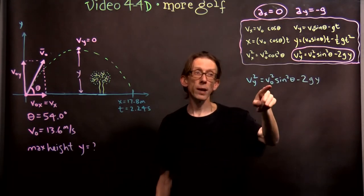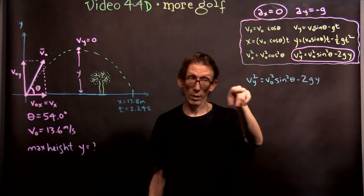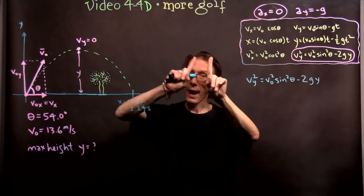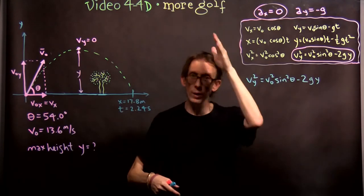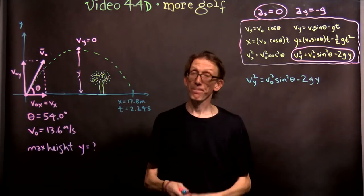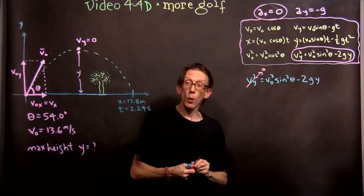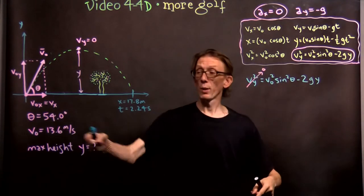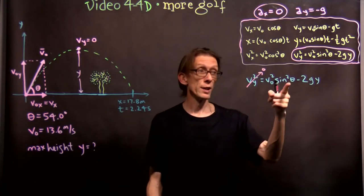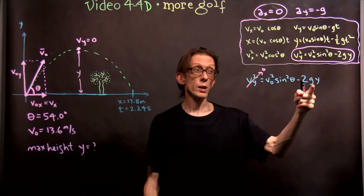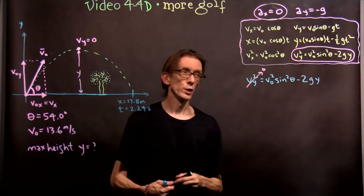Write down here. vy squared is v0 squared sine squared theta minus 2gy. We know the initial speed. Let's start here. We know vy. That's zero at the top. At the top only. This is how we fix the motion at the top. By calling this zero. We know the initial speed, 13.6 meters per second. We know the initial angle, 54.0 degrees. We know g. We can solve for y.